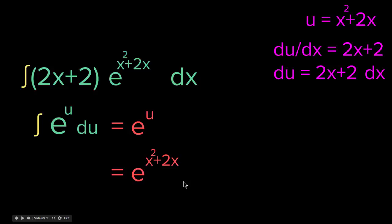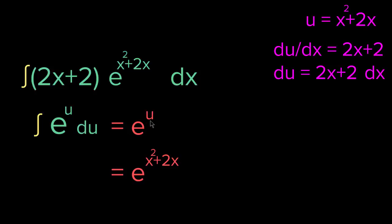That is basically u-substitution. You find a function and its derivative, assign u to the function, assign du to its derivative's differential, solve the integral, and get the simplified form. Don't forget — a common mistake — to change u back to its original x form. Always substitute back to get full credit. So the integral of (2x + 2)e^(x² + 2x) dx equals e^(x² + 2x).